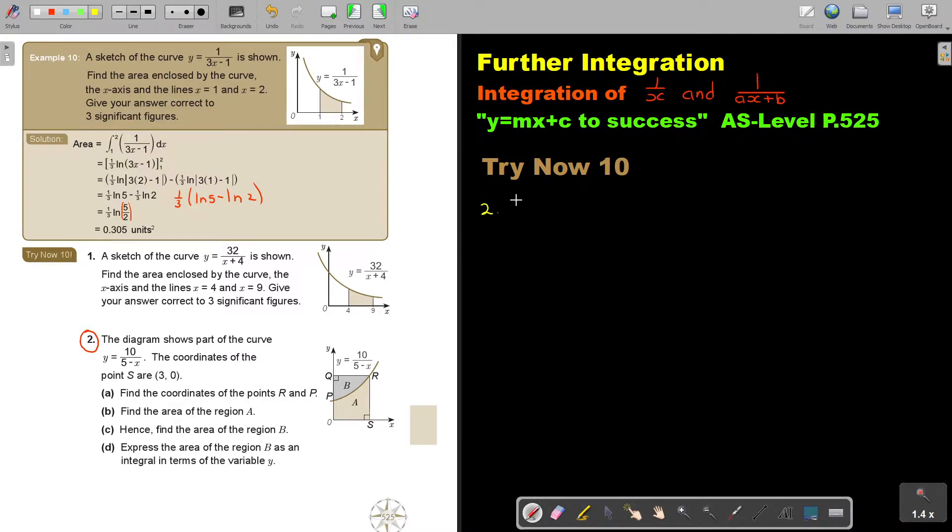Let's start with number 2. So, the diagram shows part of the curve, y is equal to 10 over 5 minus x. The coordinates of the point A, so this coordinate, let's just get another color, is going to be 3 and 0. Okay. So, find the coordinates of R and P, but let's just find all the coordinates.